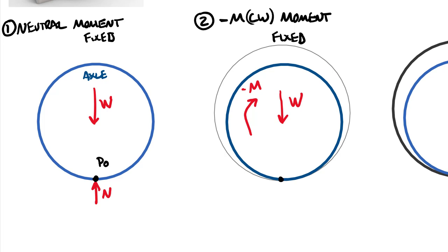Our initial contact point was P-naught, and we've moved it over to P1. Now we need a resultant force — this is still a static equilibrium problem. Summing forces in x and y: there are no forces in x, only vertical forces in y. The resultant force R is parallel to the weight force W. We also need to balance that moment. Using a standard x-y axes for all three free body diagrams, forces in x and y must balance, and we need to balance the moment as well.